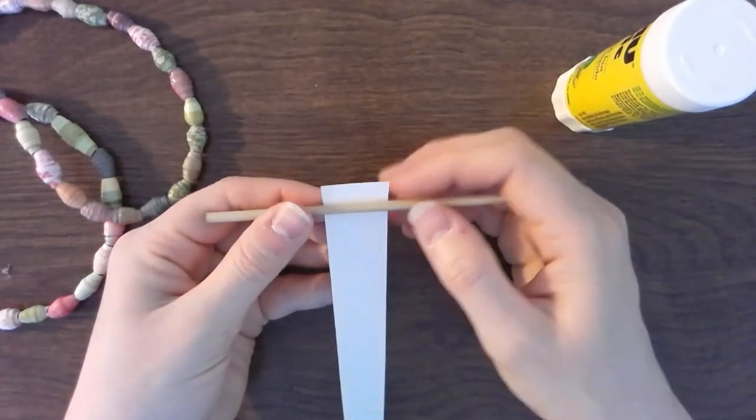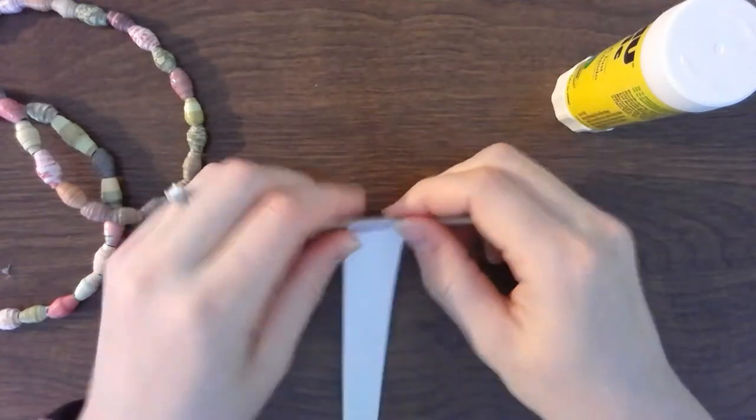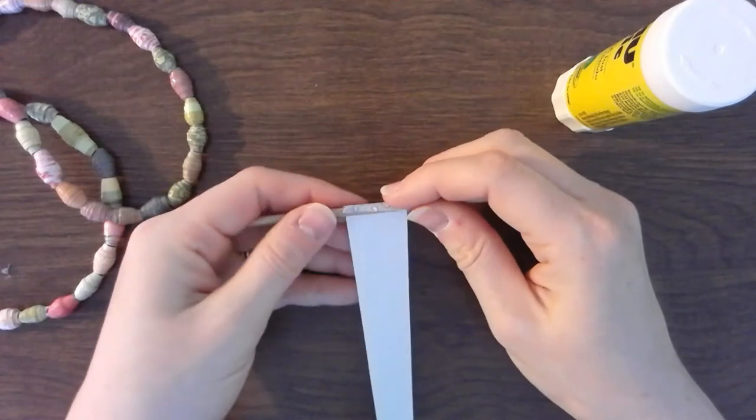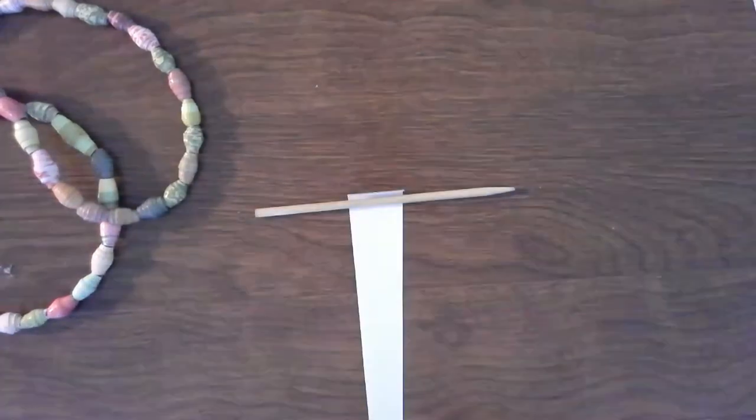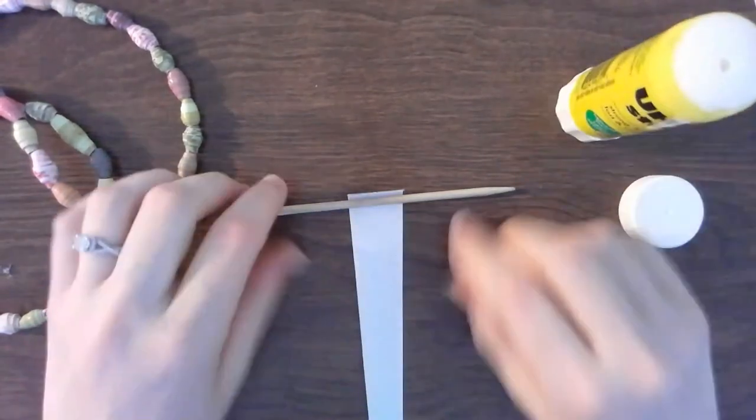So I'm just going to hold my stick a little bit from the end and I'm going to fold my paper over and I want to push that kind of tight. Now it does sometimes fall apart a little bit so you are going to have to hold on. Now before I go any further I'm going to get my glue ready to make sure my bead will hold together.